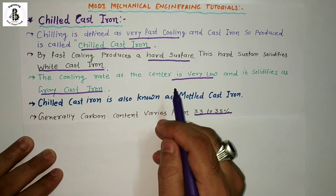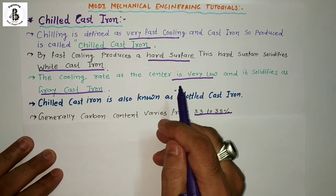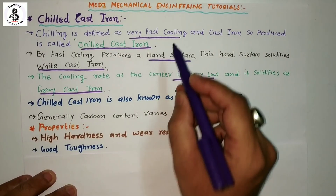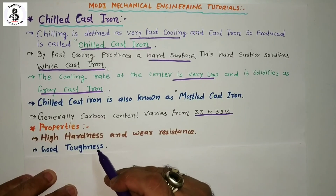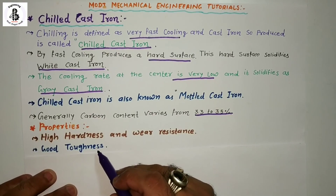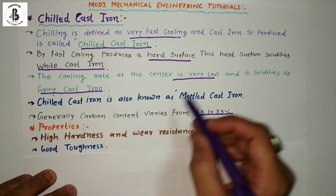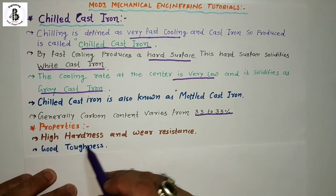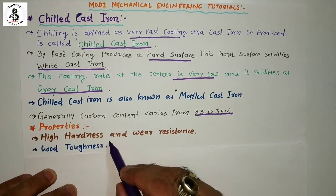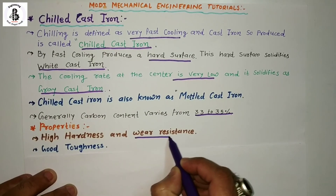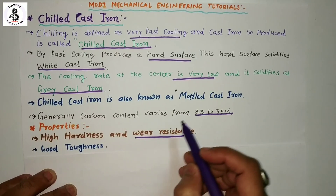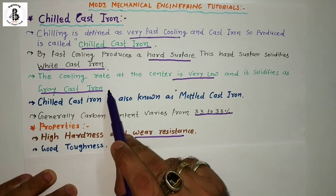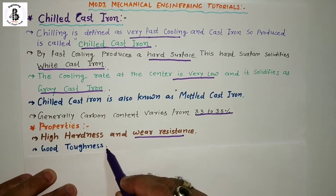Now discussing the different properties of chilled cast iron. Due to fast or rapid cooling, there is formation of cementite, which creates hard surfaces. Due to that hard surface it has high hardness, and due to that high hardness it has good wear resistance. At the center it solidifies as grey cast iron, so it also has good toughness.